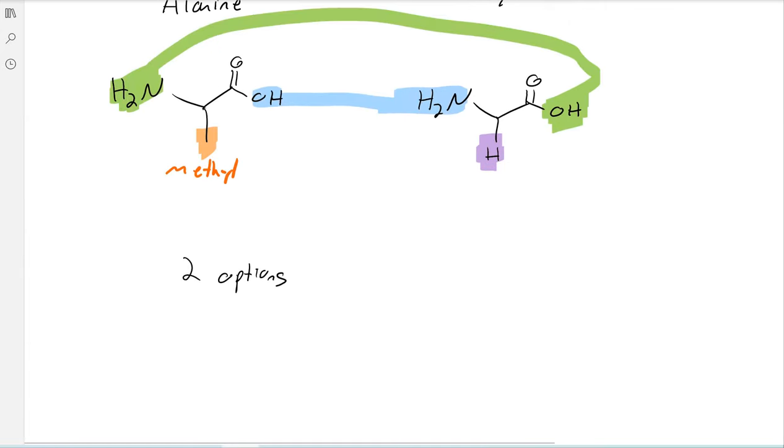So let's think about what our products are going to look like. If we condense the blue bonds that I've drawn here, we can have this product. Right, our methyl there. In this case, the alanine is coming first. And now, instead of having a carboxylic acid, we've got an amide. Then our R group, which in this case is just an H. And then our carboxylic acid.